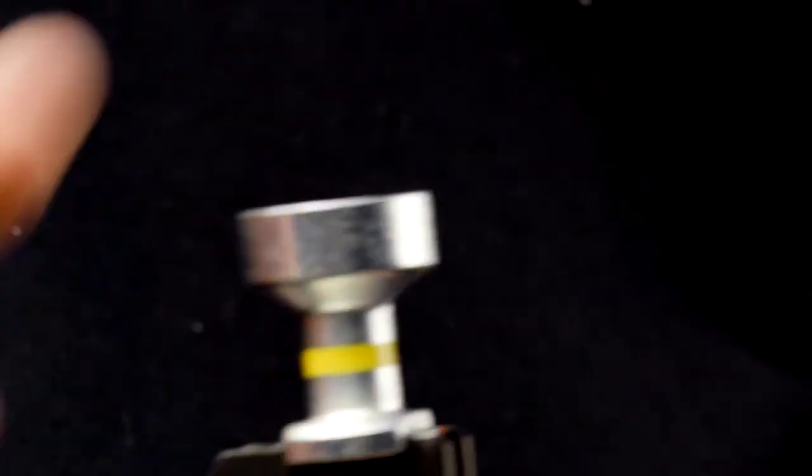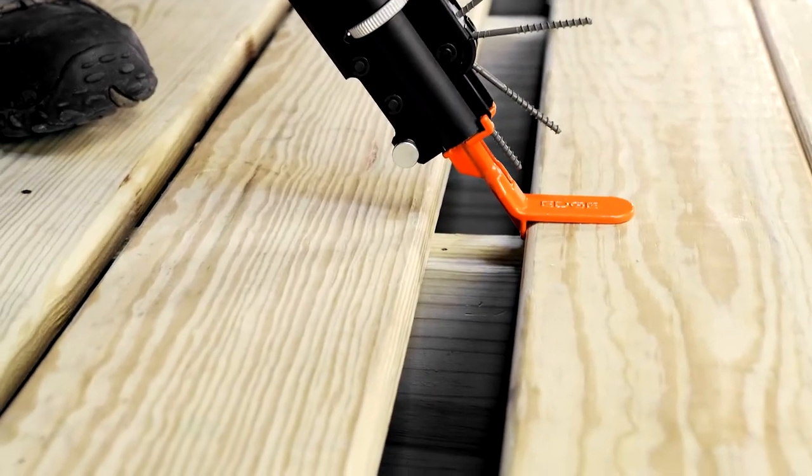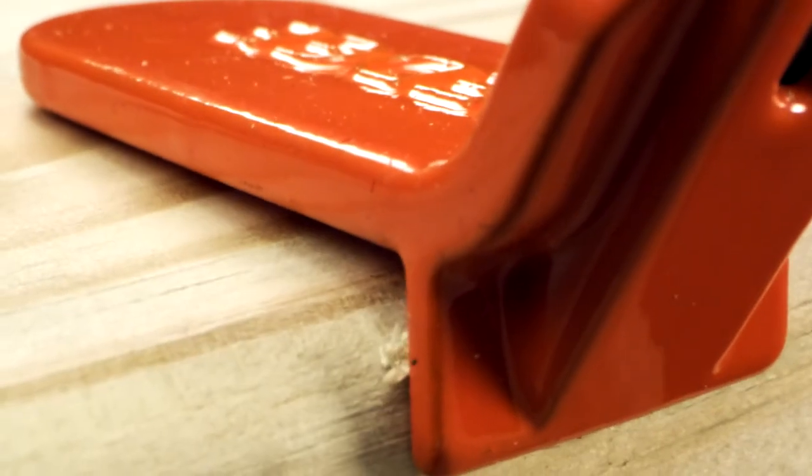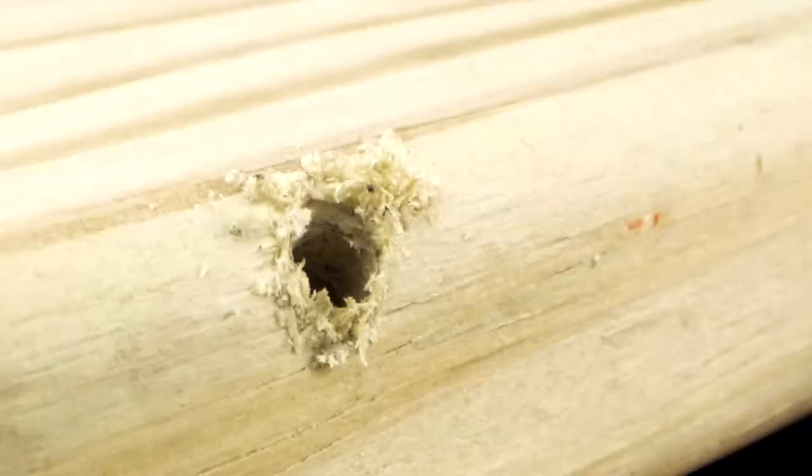For fast square decking installs, use DRIVE to fasten camo collated edge and face screws. Our collated screws auger board material as they're driven, reducing splitting and cracking.